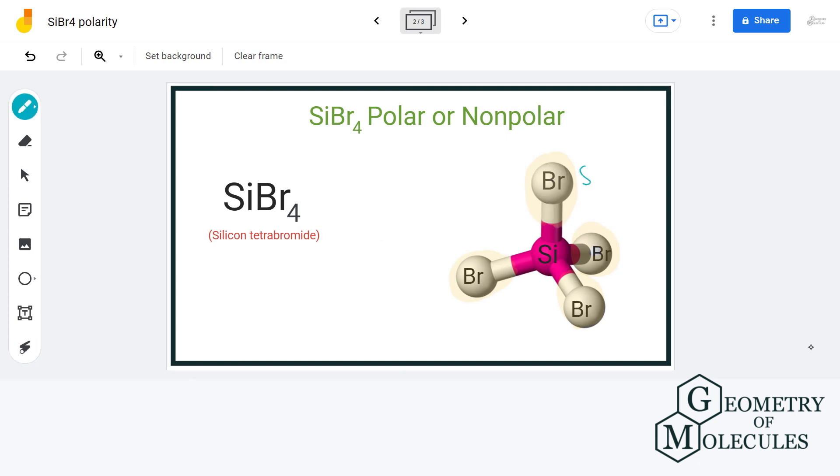So, even though there is polarity in the individual bonds, the net dipole moment is zero because of the symmetry present in the structure. So, we can say that SiBr4 is a non-polar molecule.